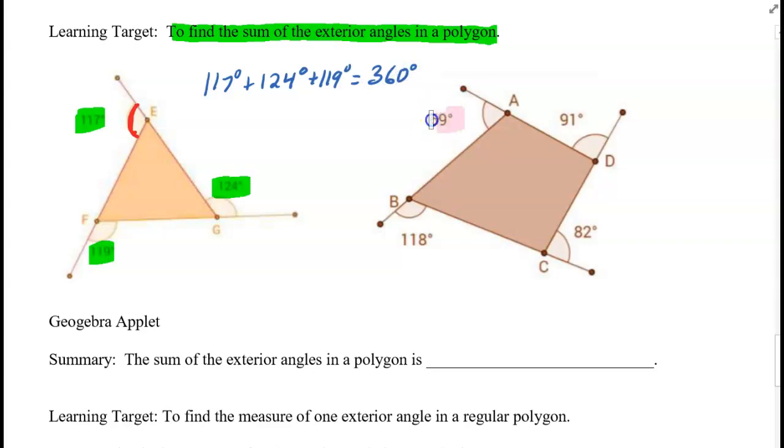If I look at this quadrilateral and I look at these exterior angles that I just highlighted in pink, and if I were to add up those angles, so when I get my calculator out and I add those angles, I get 360 degrees.